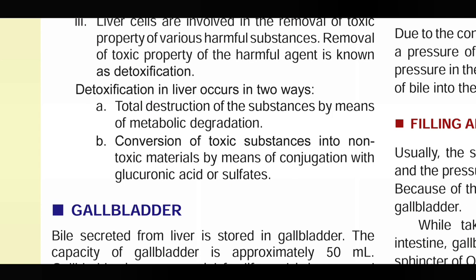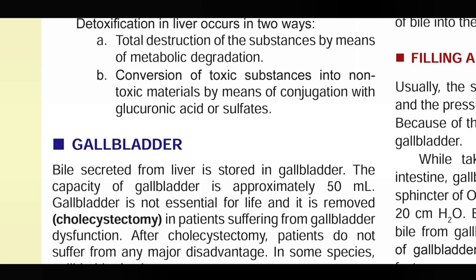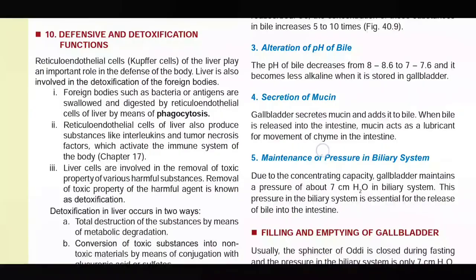Substances harmful to the body are converted into less harmful or non-toxic substances by conjugation with glucuronic acid or sulfatase. With this, the liver's functions and physiology are complete. In the next video, we will start with the gallbladder.